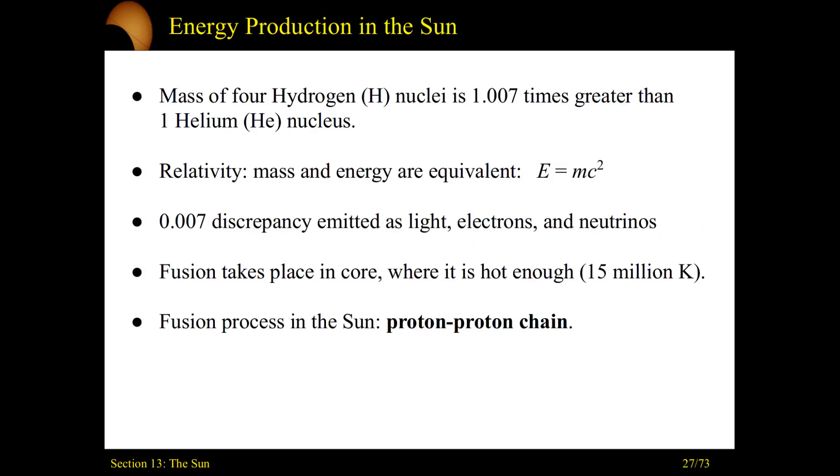And all this is happening in the core of the sun, which is around 15 million Kelvin. That's how hot we need to start getting towards for fusion processes to occur. And for our sun, its primary process is called a proton-proton chain.